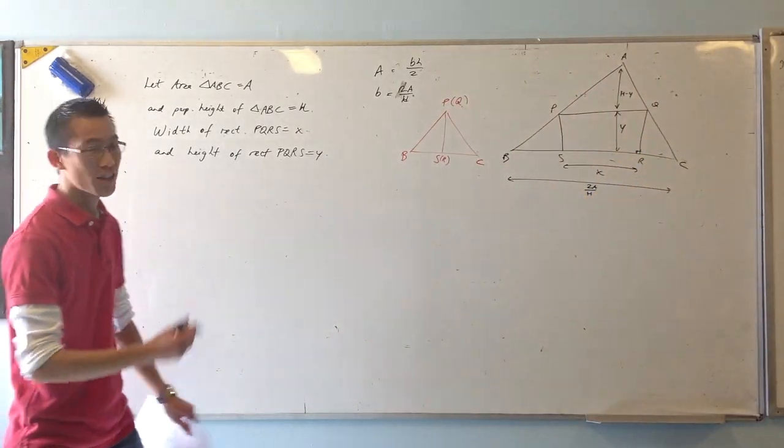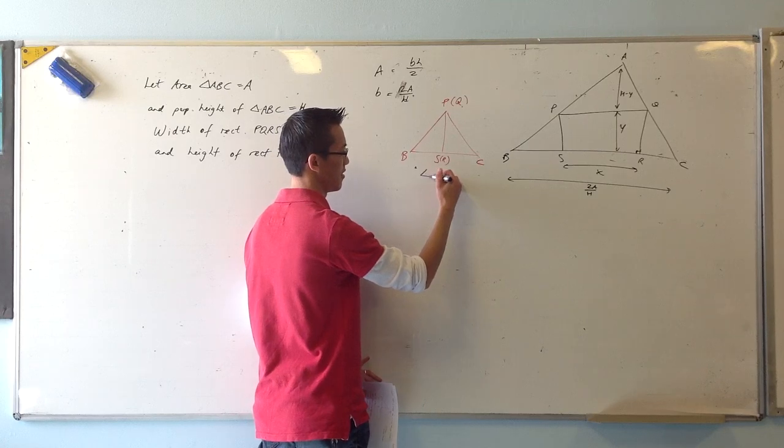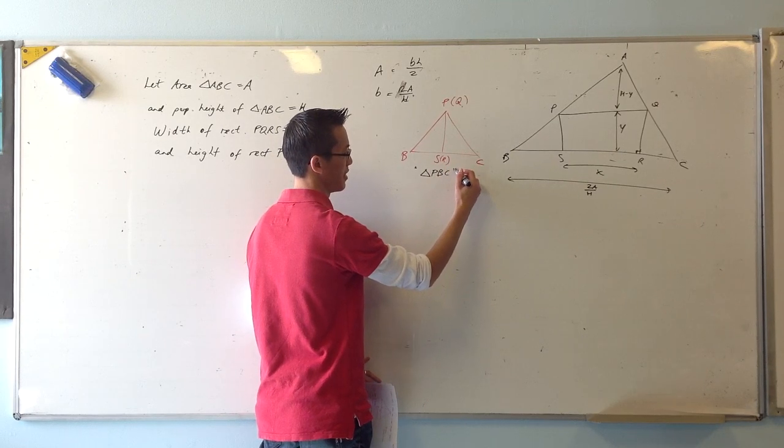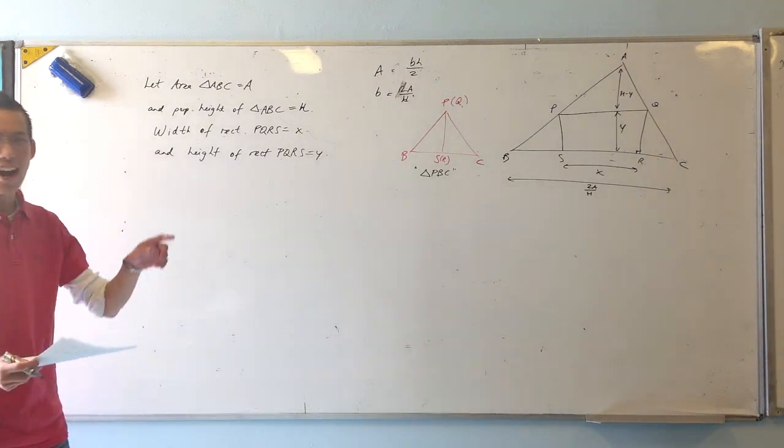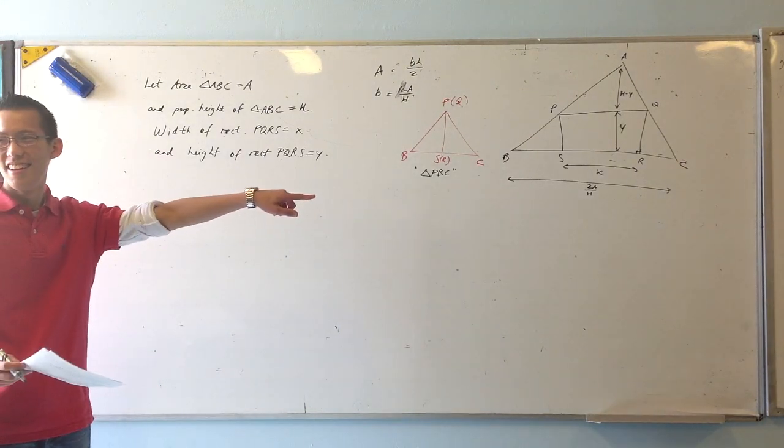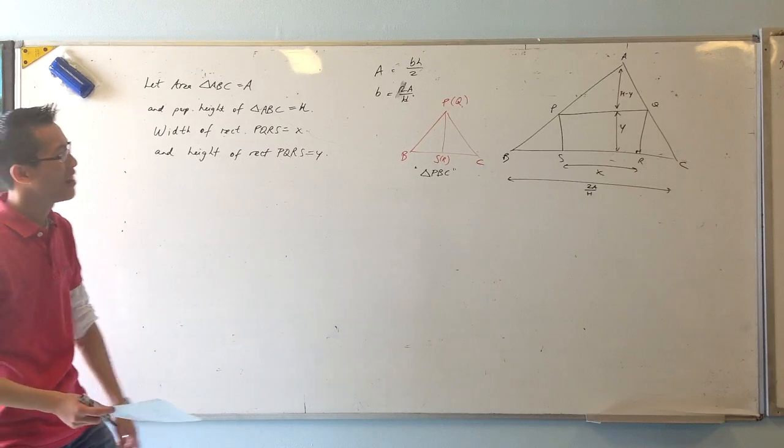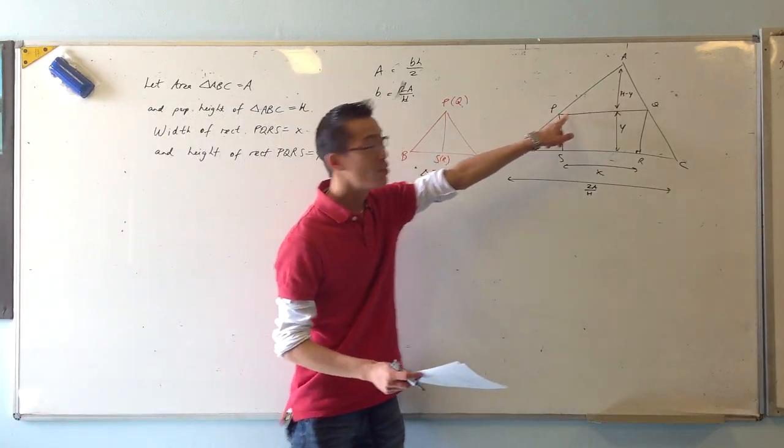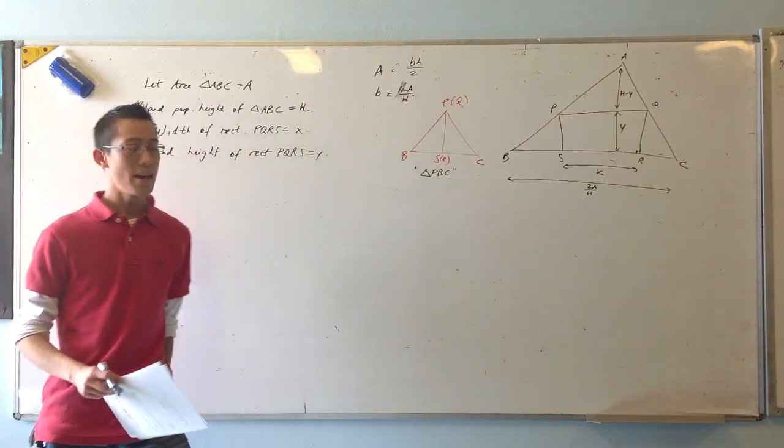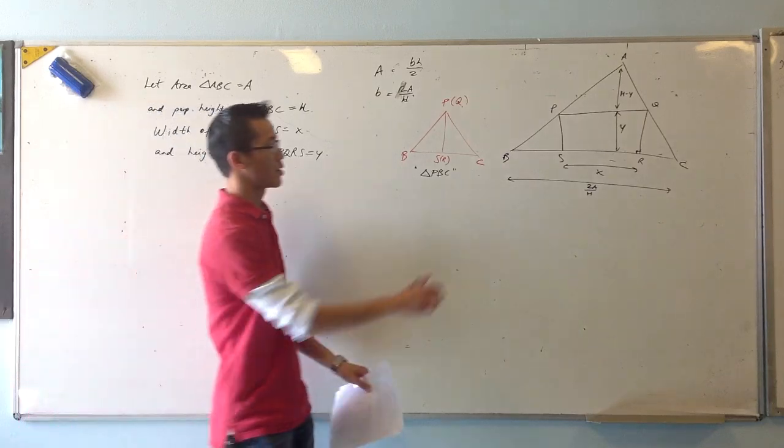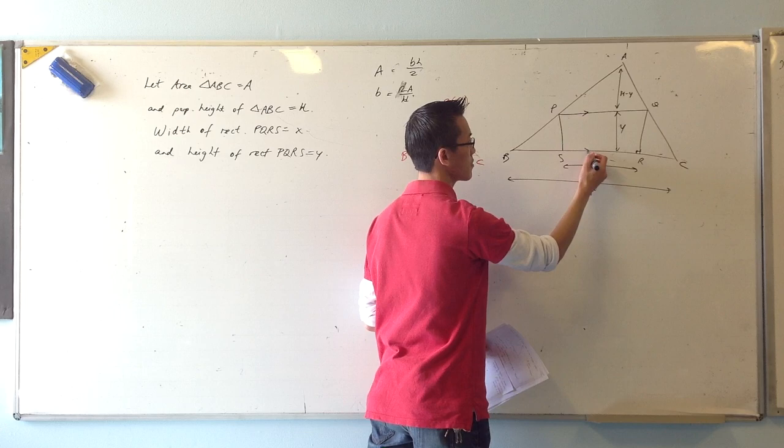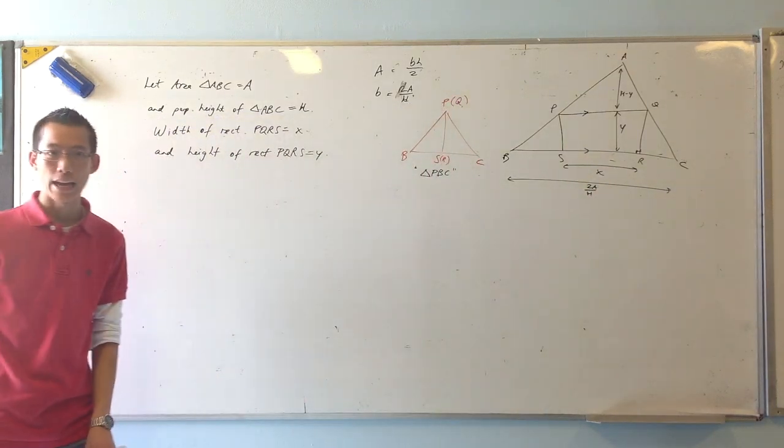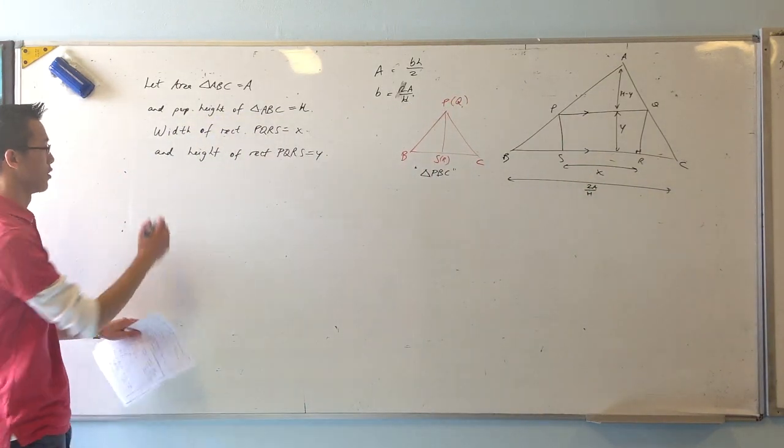I'm going to call this triangle - graceful and elegant as usual, Grant - I'm going to call this triangle PBC. And I can show that this triangle and the one on top are going to be similar. You've got, because of this rectangle here, parallel lines, so you've got a whole bunch of corresponding angles, which I'm going to show in a second.